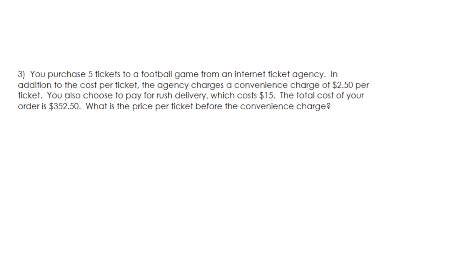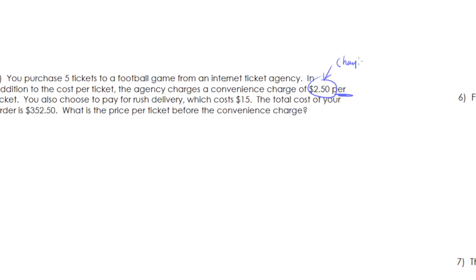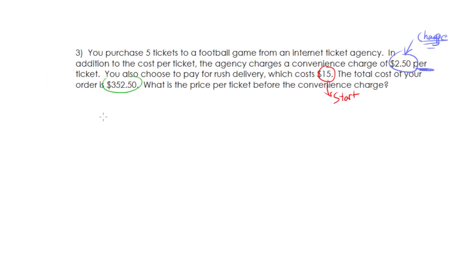Alright. This one gets confusing. You purchase five tickets to a football game from an internet ticket agency. In addition to the cost per ticket, the agency charges a convenience charge of $2.50 per ticket. So since I see that word per, I know this is a changing amount. It's the amount that comes with every single ticket. You also pay for rush delivery, which costs $15. That's just a fixed starting amount. So that's just a fixed amount. And my order total is $350.